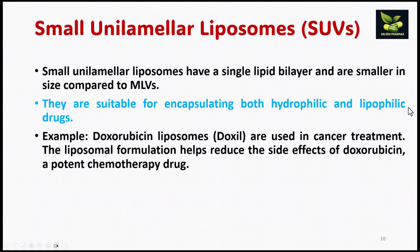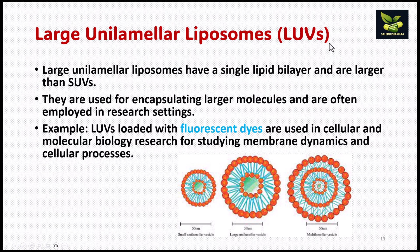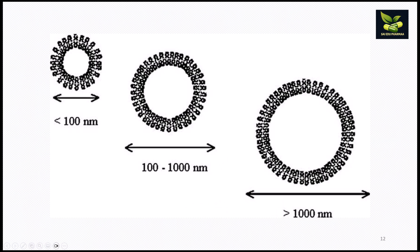Small unilamellar vesicles are suitable for encapsulating both hydrophilic as well as lipophilic drugs. An example is doxorubicin liposomes, marketed as Doxil, used in the treatment of cancer to reduce the side effects of this potent chemotherapeutic drug. Large unilamellar vesicles are used for encapsulating larger molecules and are often employed in research settings — for example, loaded with fluorescent dyes for studying membrane dynamics and cellular processes in cellular and molecular biology research.